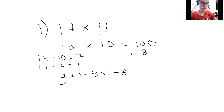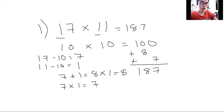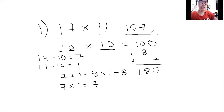Then what we're going to do next is to multiply 7 with 1 for the ones digit. Adding all together, it will become 187. Why did we multiply 10 and 10? It is for the hundreds digit. So the answer is 187.